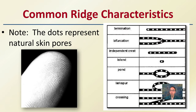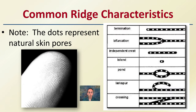Note that dots seen on a fingerprint represent natural skin pores. When looking at dots, they refer to the pores on your skin and their location, which causes a change in where the ink is deposited.